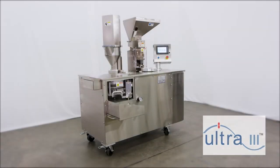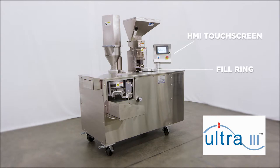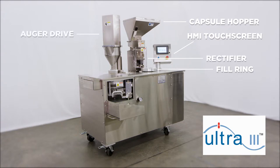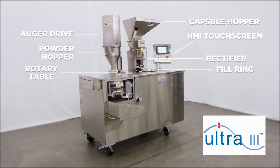The Capsigel Ultra 3 has nine main operating components: HMI touchscreen, fill ring, capsule hopper, rectifier, auger drive, powder hopper, rotary table, joiner, and recycle bin.